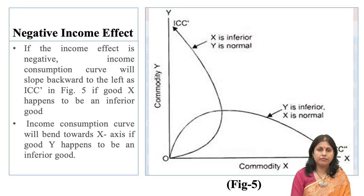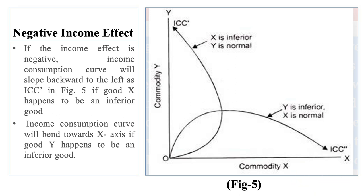If the income effect is negative, the income consumption curve will slope backward to the left, as ICC-dash in figure 5. If good X happens to be an inferior good, the income consumption curve will bend towards the X-axis; if good Y happens to be inferior, it will bend towards the Y-axis. Figures 4 and 5 show the various possible shapes the income consumption curve can take. A noteworthy point is that it is not the indifference curves which explain why a good is inferior — indifference curves only describe or illustrate the inferior good phenomenon.